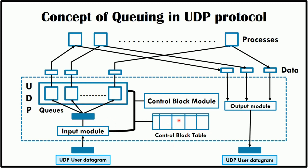The control block table keeps track of open ports, and the control block module manages the control block table. The UDP package uses a set of input queues for each process. The output module creates and sends user datagrams. Several processes may want to use the services of UDP; UDP multiplexes and demultiplexes to handle this, so that multiple processes can run on a single host.